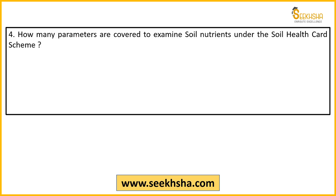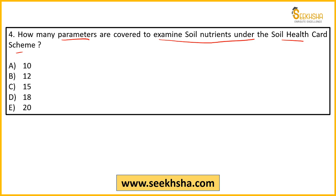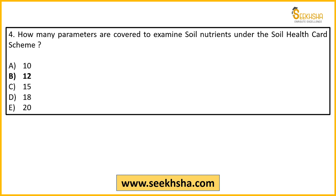Fourth question: How many parameters are covered to examine soil nutrients under the Soil Health Card Scheme? Soil Health Card Scheme ko hum pehle bhi detail mein discuss kar chuke hain — agriculture schemes wali playlist mein milega. Soil Health Card Scheme mainly 12 parameters ko target karti hai.